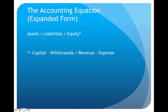Now that we know those four components, we can see a different version of the accounting equation. The original version is assets equal liabilities plus equity, but the expanded form breaks equity into four separate components: positive capital, negative withdrawals, positive revenue, and negative expenses. If we total all the assets the business owns, it should equal all the debts and all the equity netted together.